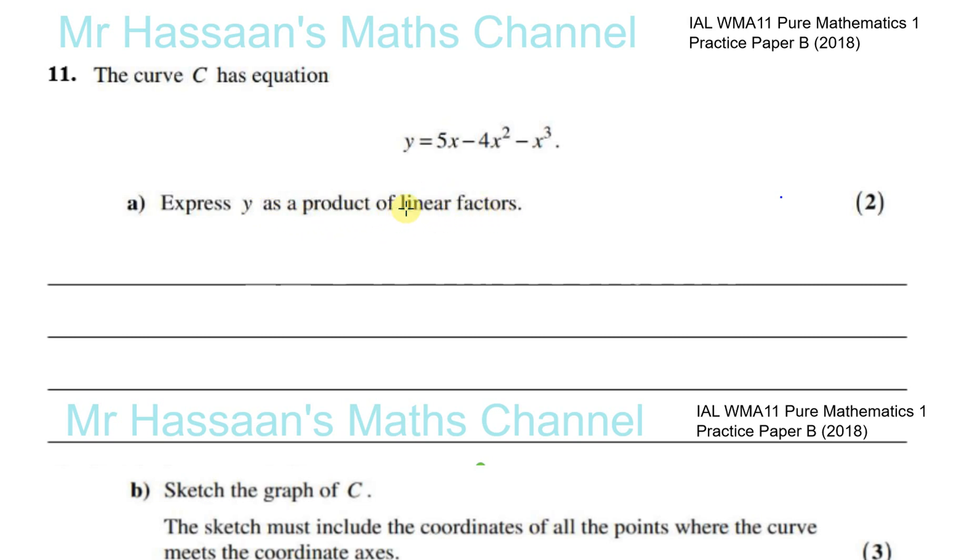Basically that's just another way of asking you to factorize this expression and they're basically telling you that the factors will all be linear. You won't have like X squareds or X cubes in the factors, it will all be X to the power 1 in the factors. So they're basically asking you to factorize this. That's what you do when you factorize something, you express something as a product of its factors. Some students were confused as to what was being asked.